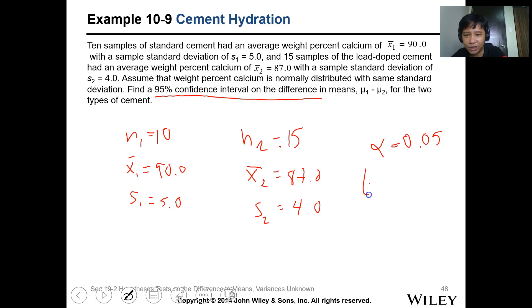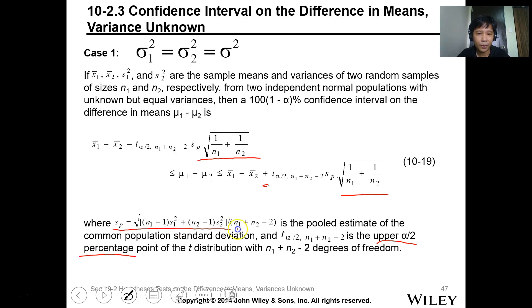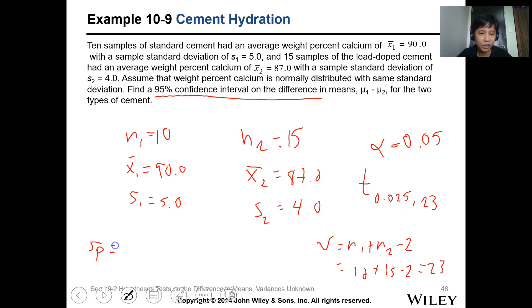So we need to find in the t-table: t when this is alpha over 2, so 0.025, and we need to get the degrees of freedom which is n1 plus n2 minus 2. So this is 10 plus 15 minus 2, which is 23. So we're looking for that t-value. And another thing we need to compute is sp, the pooled standard deviation.